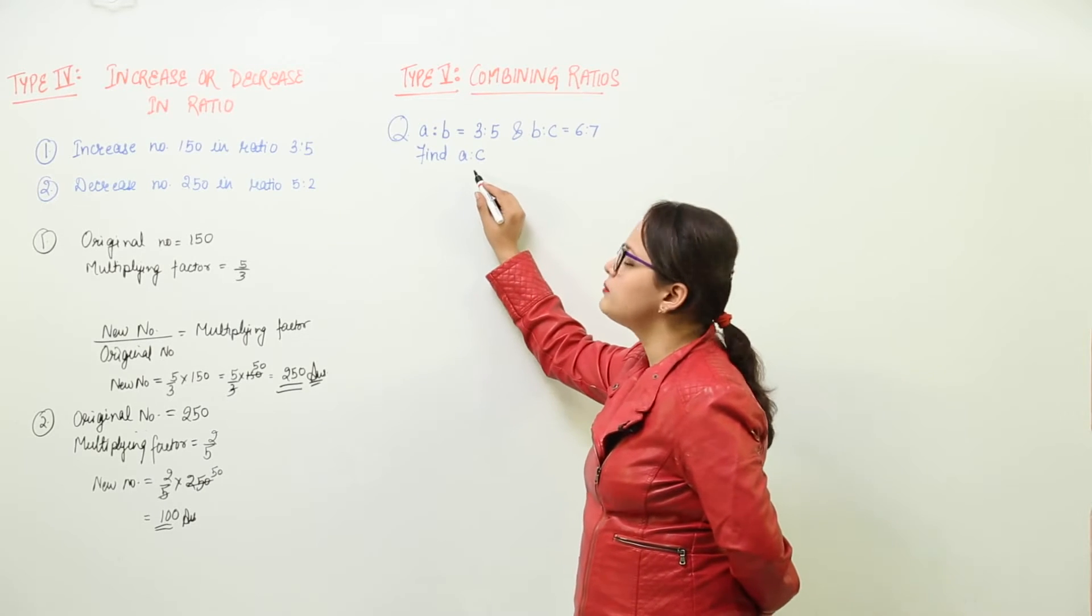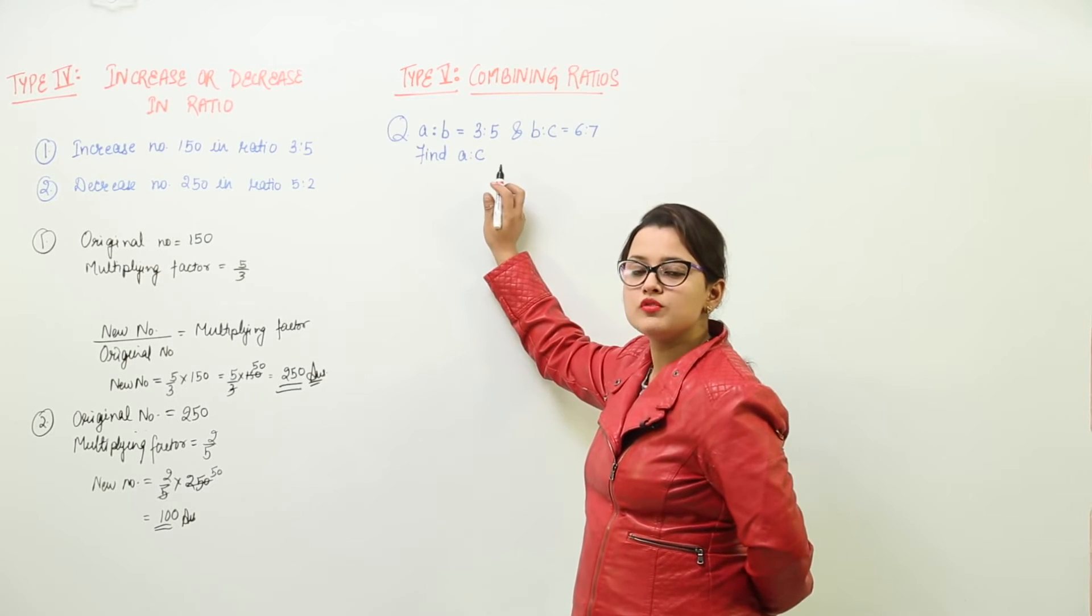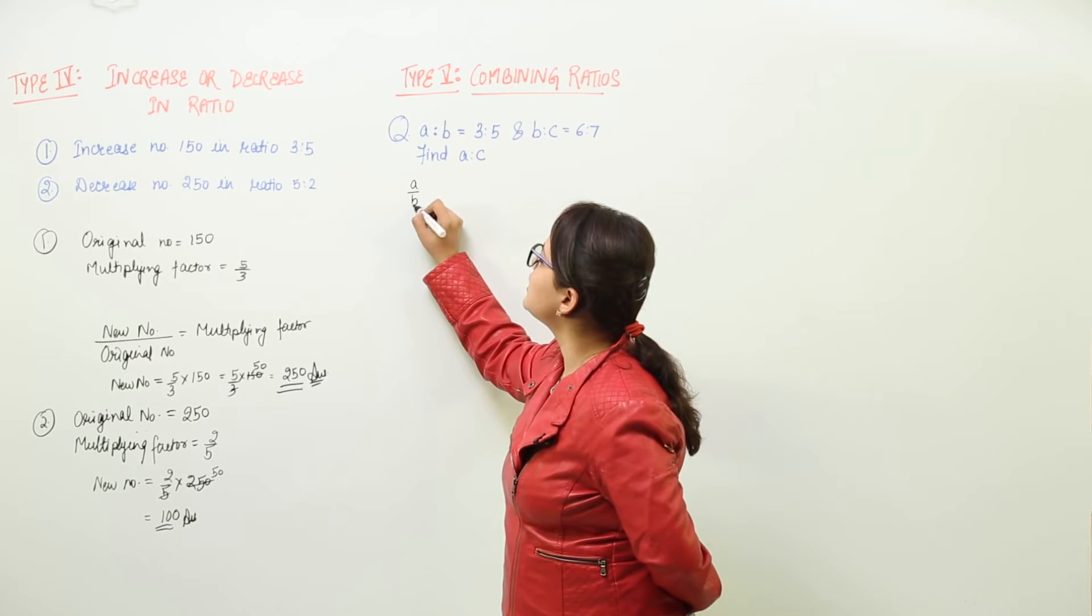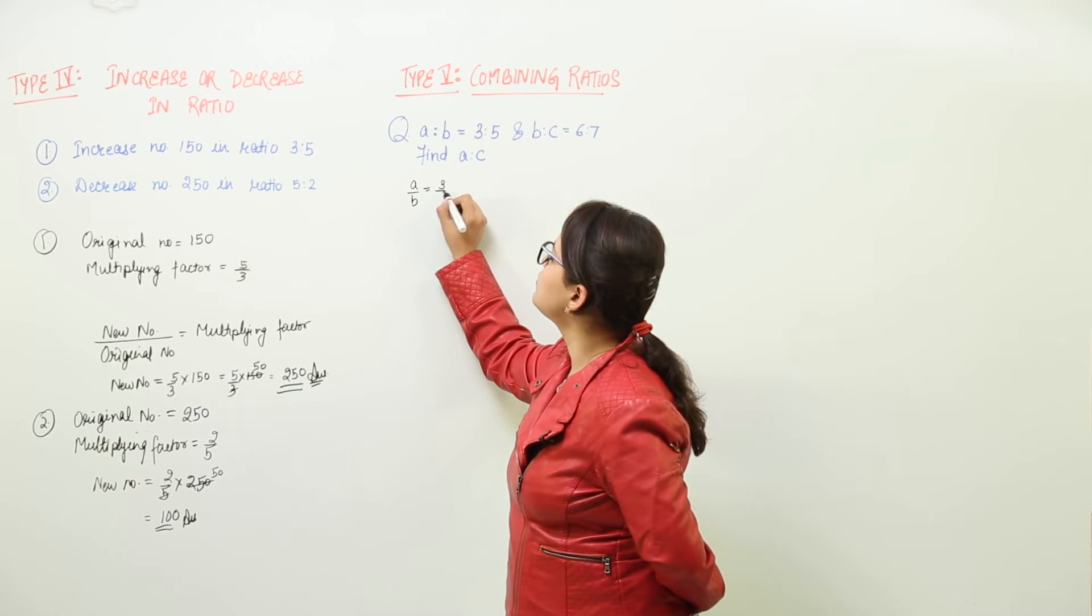we have to find out what A is to C. So first of all, let us write what is given, that is A ratio B. We can write A upon B equal to 3 upon 5.